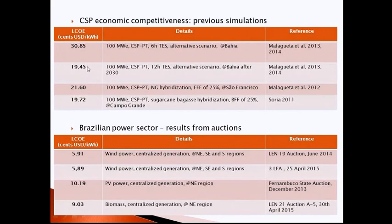In these tables, we can see that using SAM, we analyzed different configurations of CSP plants, including different sizes of thermal energy storage and different shares of backup systems to produce electricity. In all cases, the levelized cost of electricity, LCOE, was always higher than the price of electricity contracted in recent auctions, including renewable energy auctions. So we looked for an alternative to achieve cheaper electricity from CSP in Brazil.